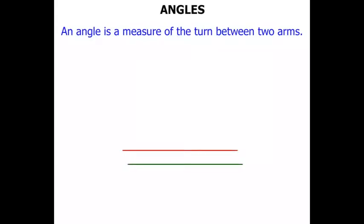So let's consider two arms there, a red one and a green one. Let's put the red one on top of that green one and start turning it. Now the amount of turn there is known as the angle.